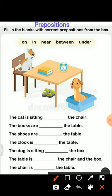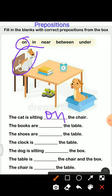The first one: the cat is sitting ___ the chair. So children, here is a cat — where is it sitting? It is sitting on the chair. So we will choose the correct word from the box and write here: the cat is sitting on the chair.